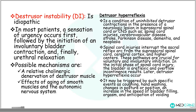A spinal cord injury interrupts the sacral reflex arc from the suprasacral spinal cord, cerebral cortex, and higher centers — a pathway crucial for the voluntary and involuntary inhibition of urination. In the initial phase of spinal cord injury, the bladder is usually areflexic and overflow incontinence occurs. Later, detrusor hyperreflexia will develop. This detrusor hyperreflexia may be triggered by specific events, for example, coughing, a change in posture, a change in the speed of bladder filling, orgasm, or anticipation of voiding.